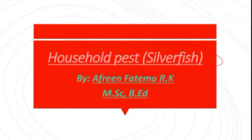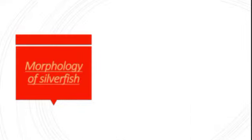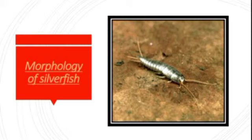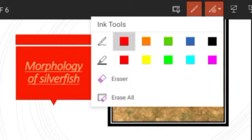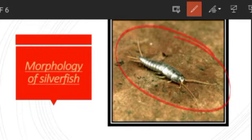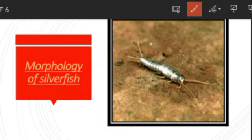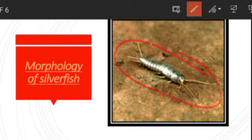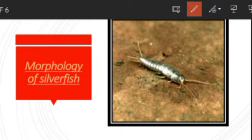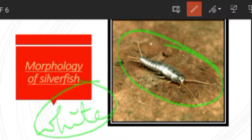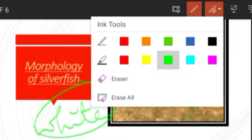Let us go for the morphology. Silverfish are really very small and minute insects. They are wingless insects belonging to the order Thysanura, where wingless insects are included. They have a silvery color and a fish-like appearance. Their early growth stages are whitish in color, and when they grow up completely they get this silvery grey color.